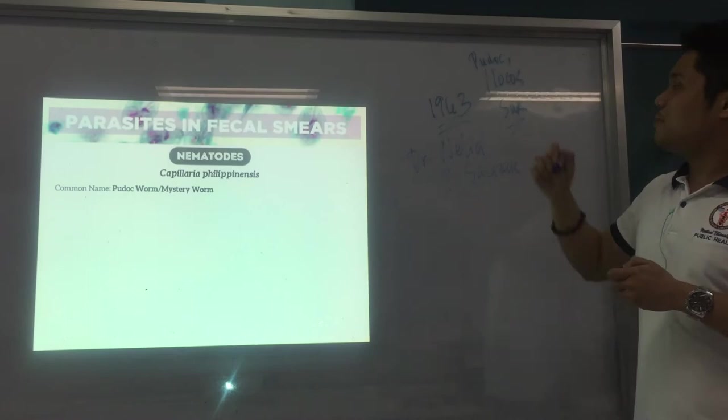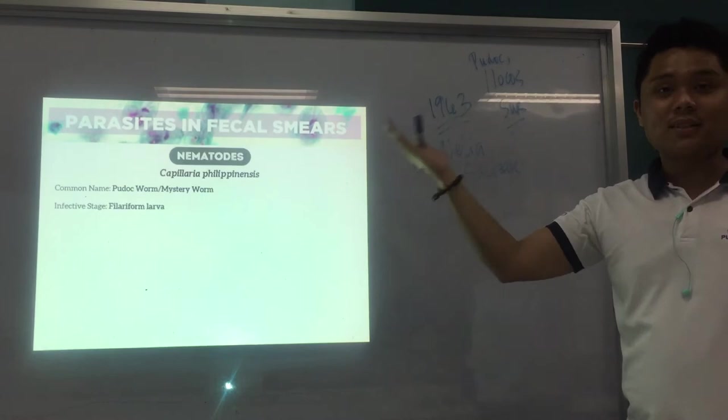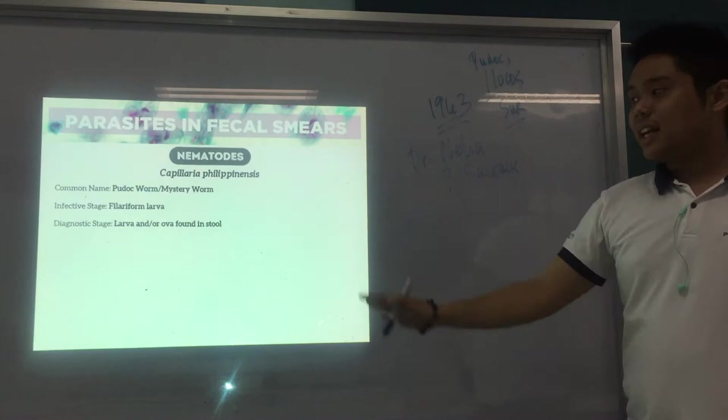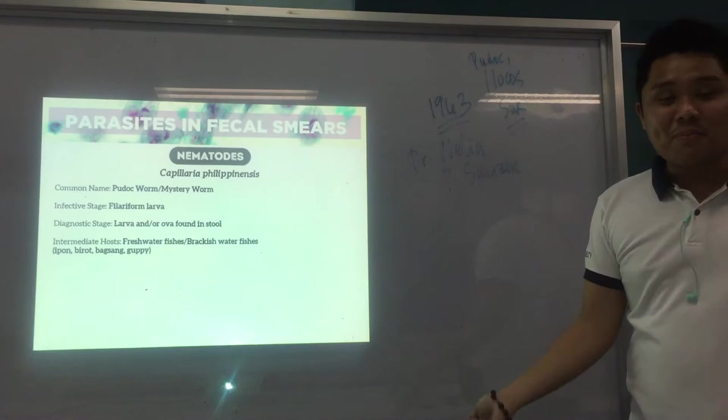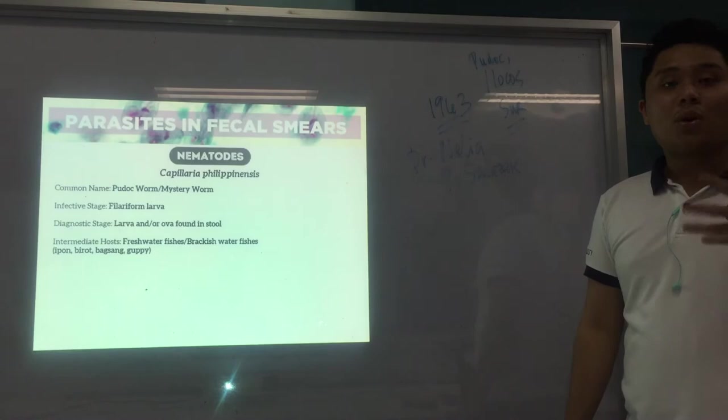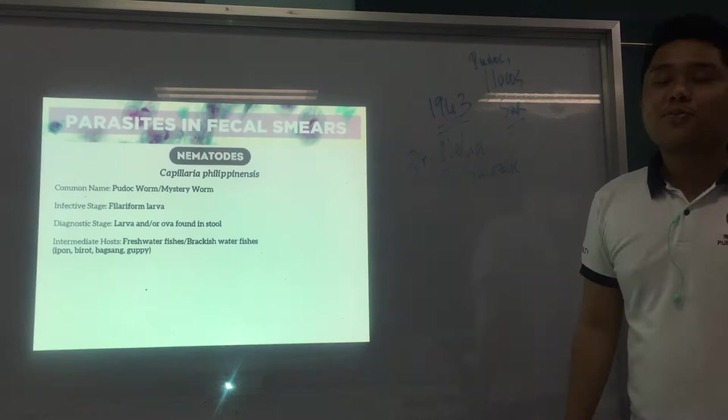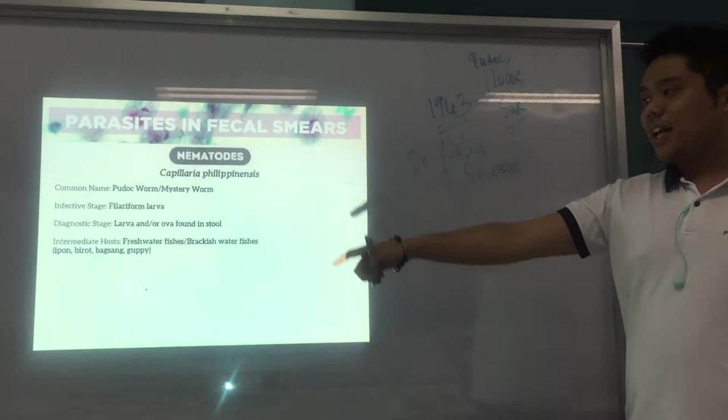The infective stage is the filariform larva. The diagnostic stage could be larva and/or ova found in the stool. It has an intermediate host — the host that harbors the larval stage of the parasite. The intermediate host is freshwater fish or brackish water fishes, with examples such as ipon, birot, bagsang, and gapi.